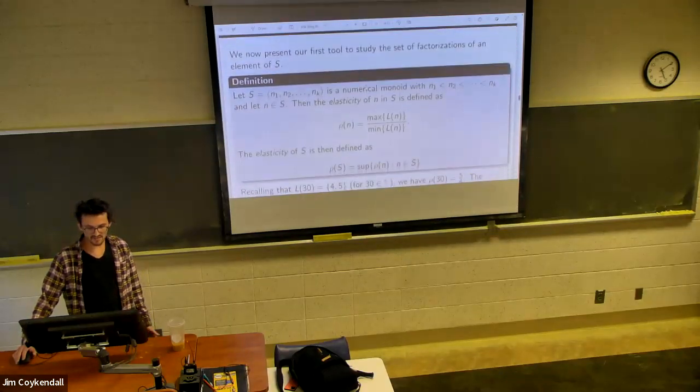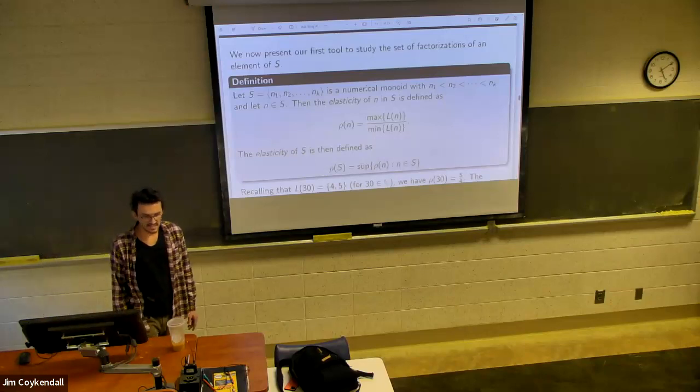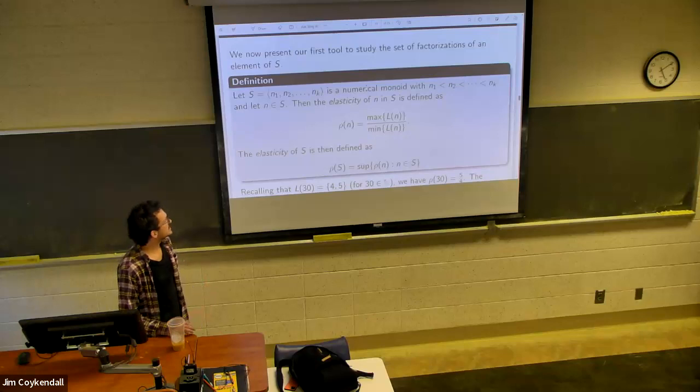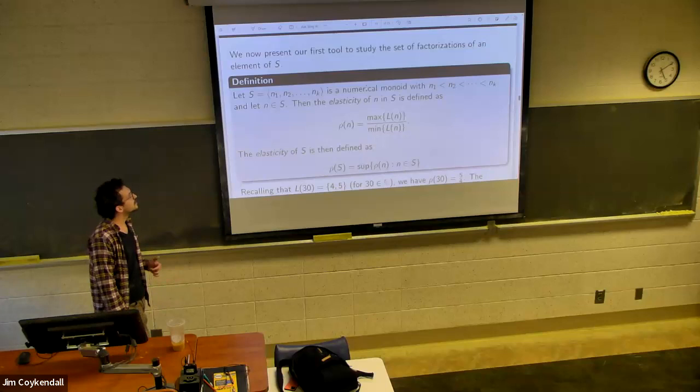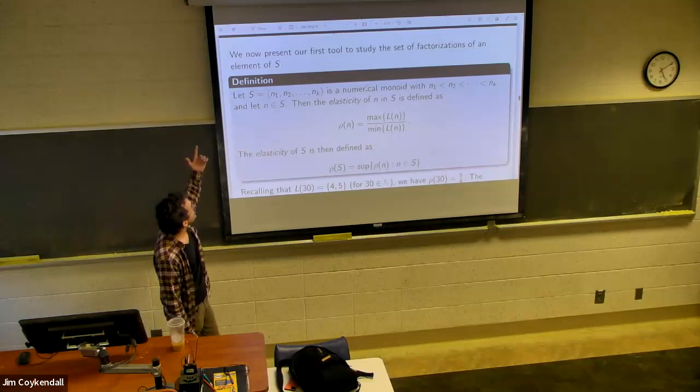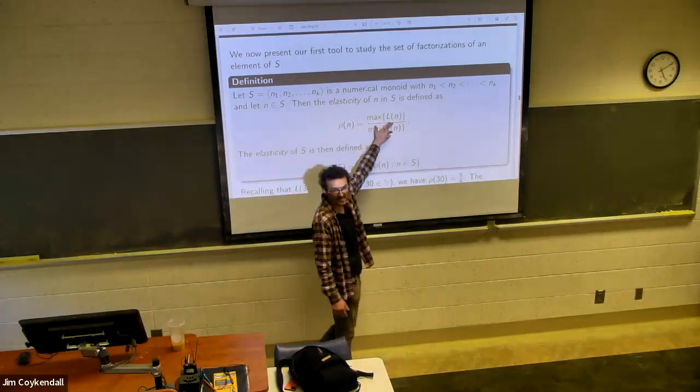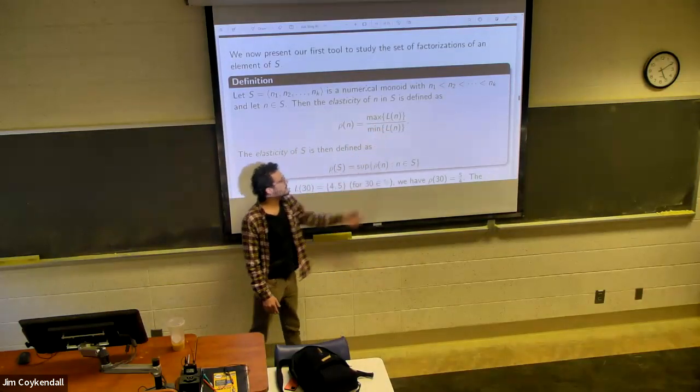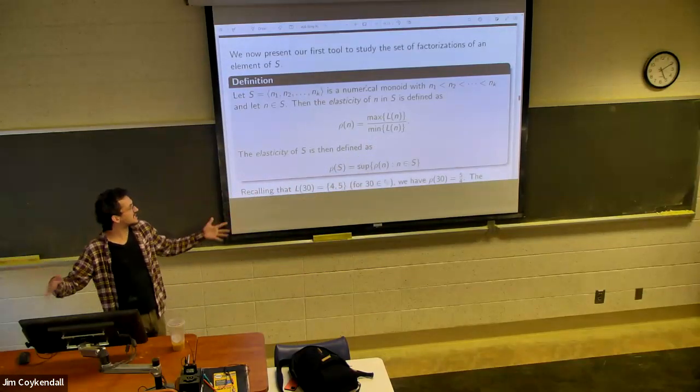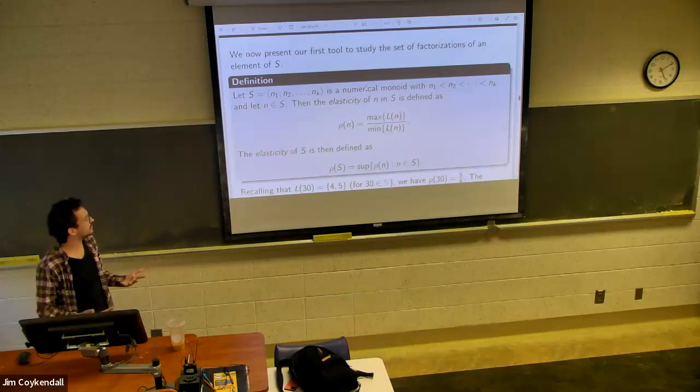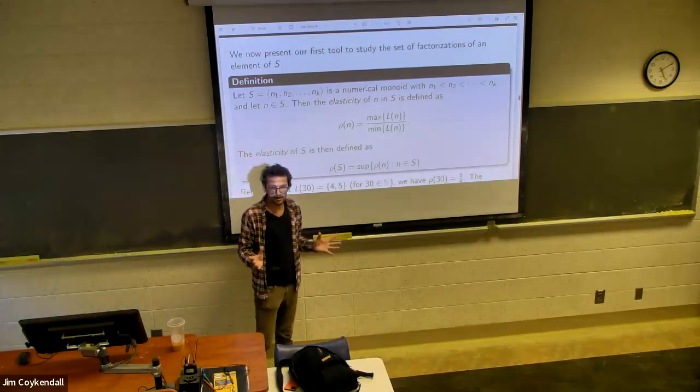So now we can kind of start studying. How do we analyze how not prime we are? The first is called the elasticity, and it's defined to be the maximum of the set of lengths divided by your minimum. And it kind of shows you how spread out it is, like butter, keeping the theme of food, right? So it kind of gives you a sense of how spread out our lengths are.